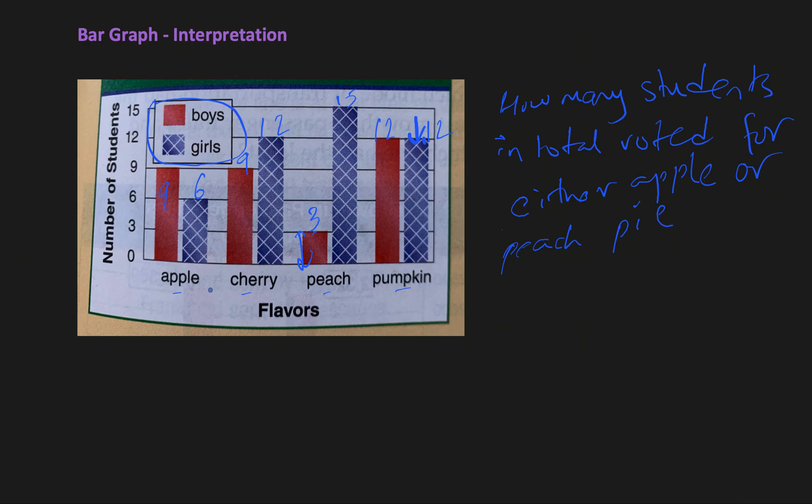The question is, we have to figure out the number of students who voted for either apple pie or peach pie. The first step would be to calculate the number of students for apple pie. We can see here that total nine boys and six girls said that they like apple pie, so if we add that we get 15.